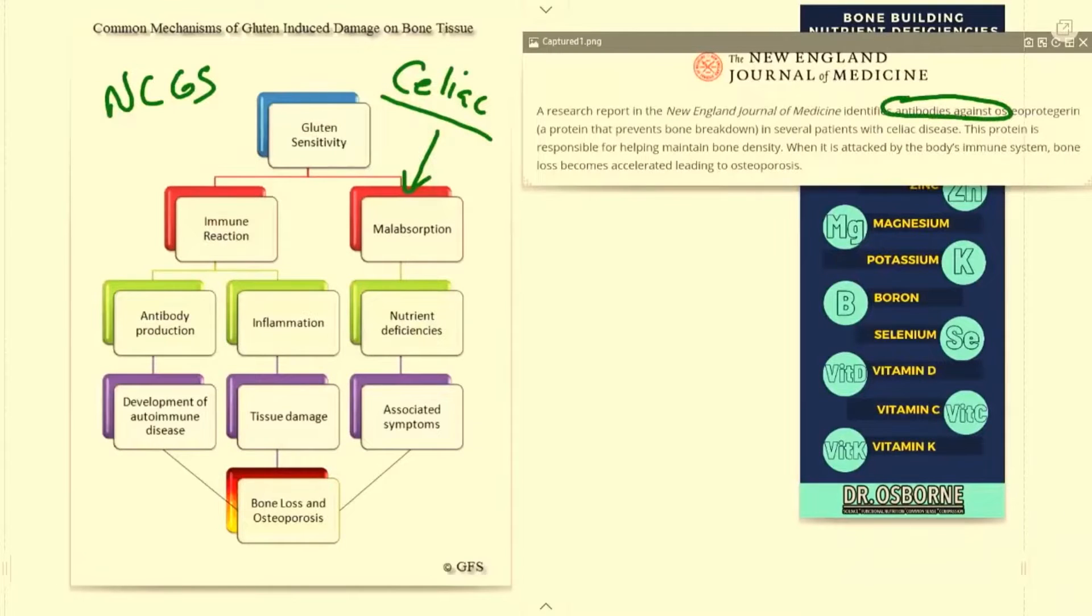showing that people with celiac disease can actually produce antibodies against a protein called osteoprotegrin. This protein prevents the breakdown of bone. What the authors of this research study concluded is that celiac disease is an autoimmune condition where your immune system attacks the small intestine.